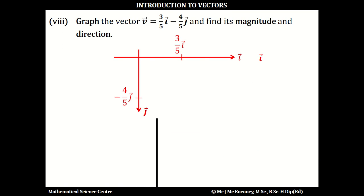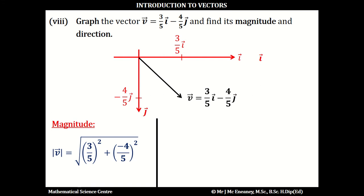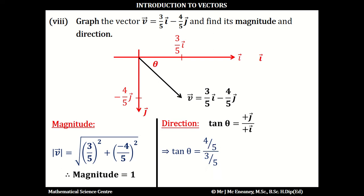In part 8, if we've got 3 fifths i minus 4 fifths j, we move across to 3 fifths and then down 4 fifths. Using Pythagoras' theorem, the magnitude of v is going to be the square root of 3 fifths squared plus minus 4 fifths squared. This works out as the square root of 9 over 25 plus 16 over 25, which works out as 25 over 25, which is 1. To get the angle theta, the tan of theta is the positive j over the positive i, so the tan of theta is 4 fifths over 3 fifths. The 5s cancel and theta is inverse tan of 4 over 3, and this means the angle theta works out as 53.13 degrees. The positive i means east, the negative j means south, so the direction is east, 53.13 degrees towards the south.